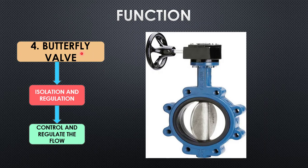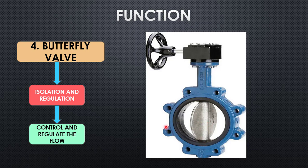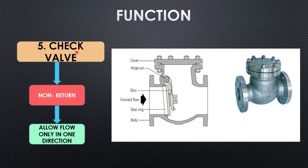The fourth valve is the butterfly valve, which is used for both isolation and regulation — you can arrest and control the flow. The butterfly valve has a disc in the middle and a hand wheel. When you rotate the hand wheel, it turns the disc to allow the flow; rotating it in the anticlockwise direction arrests the flow.